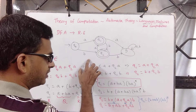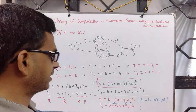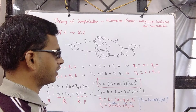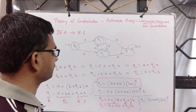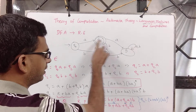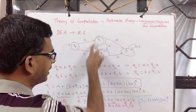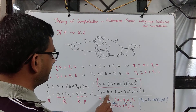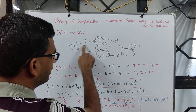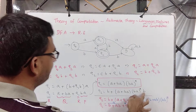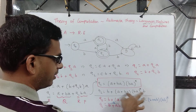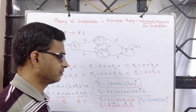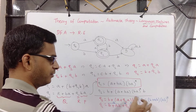So for the same machine we have two different regular expressions for Q2 — one obtained by substituting Q1, and another by applying Arden's lemma directly. Both are equivalent. This interpretation says it is either B, or AB, and after AB you can loop AB any number of times; or it is B, or BA followed by any number of BA followed by B.